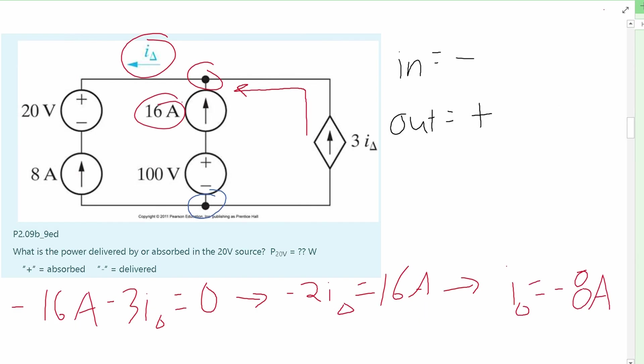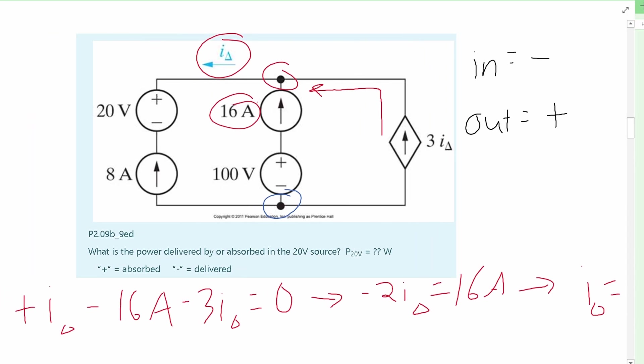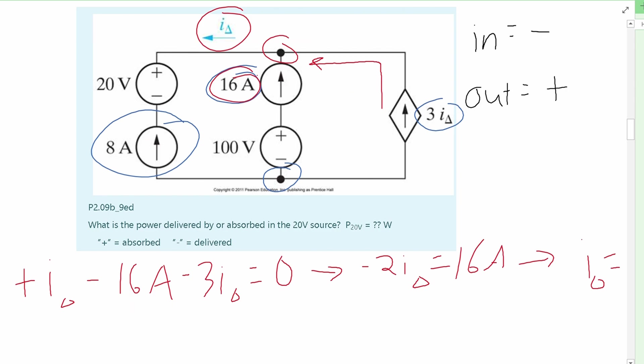If we wanted to do the same thing for the lower part in blue, we can. So we are going to look at the blue part, and for this one we're going to look at 8 amps because that's what's going into it. We are going to look at the 16 amps again, and we're going to look at this 3 I delta. We're not going to look at this I delta because it's not interacting with our node.